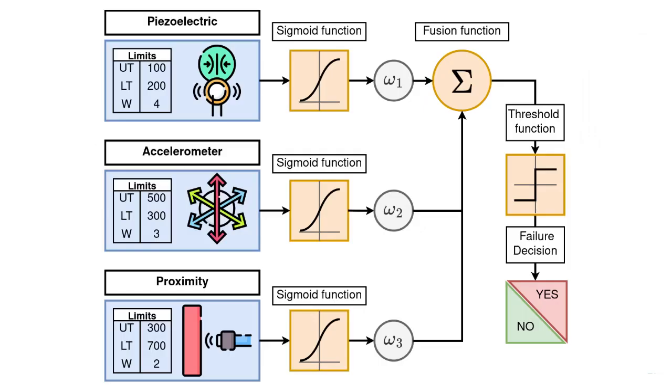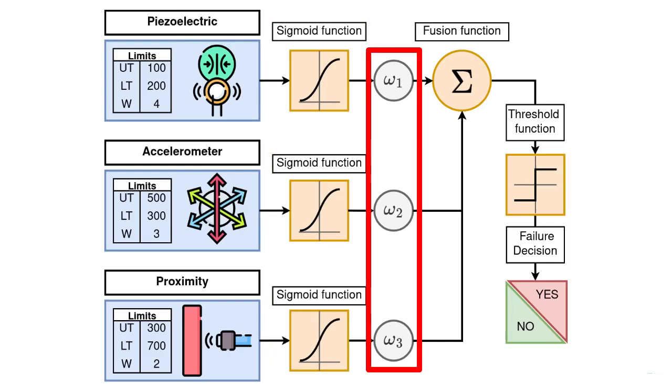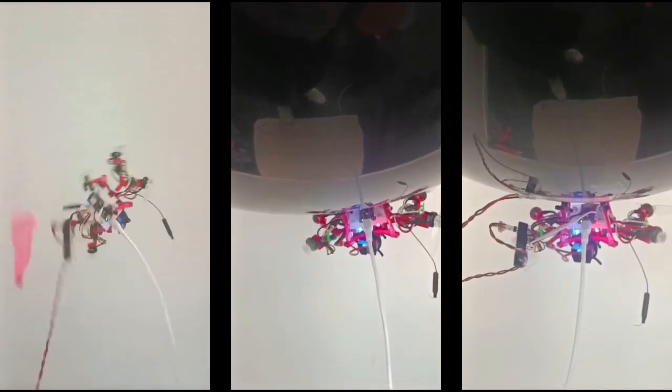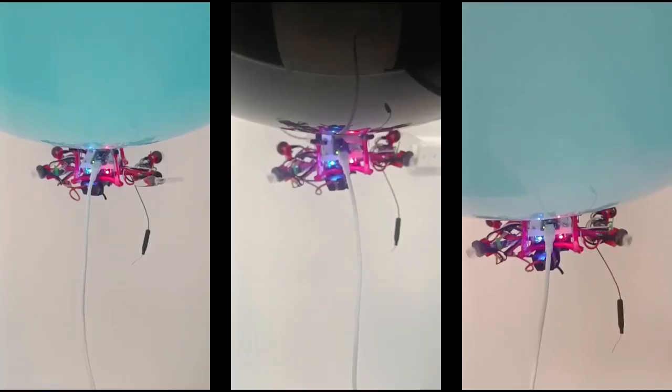The response from each sensor was evaluated to distinguish actual balloon failure from false positives. Each sensor's output was passed through a sigmoid function, multiplied by a weight, and finally summed to give a final fused value. This value was then compared against a threshold, which led to a failure decision. Multiple tests were conducted to test the balloon failure sensing algorithm. This was conducted with different balloons as well as with different states of the propellers.